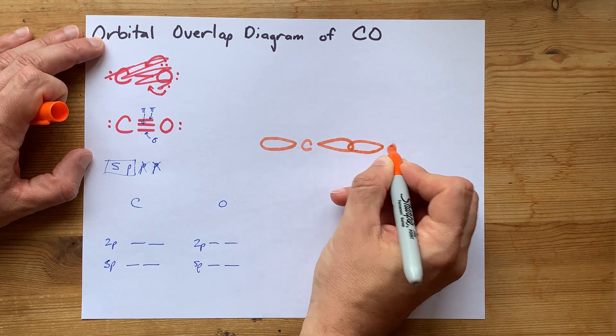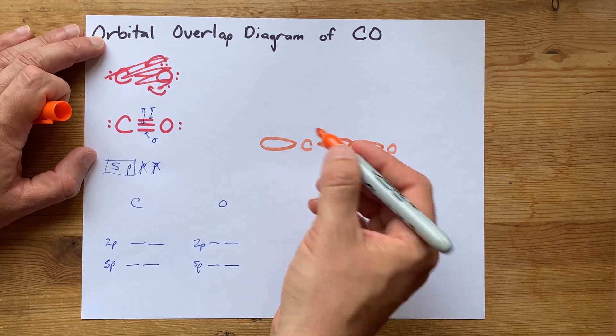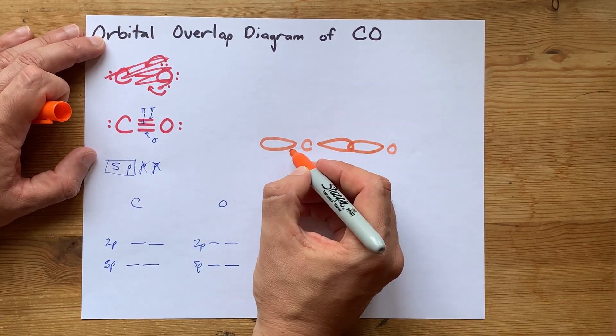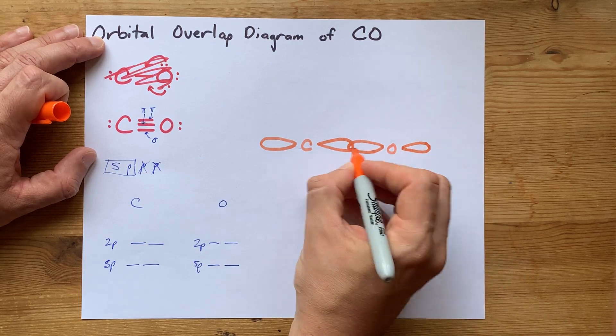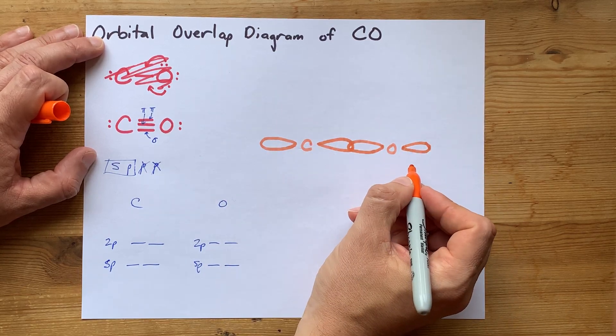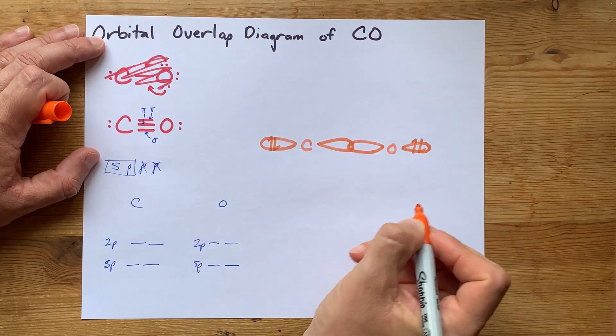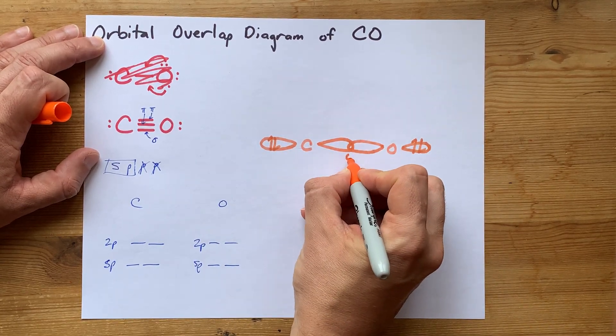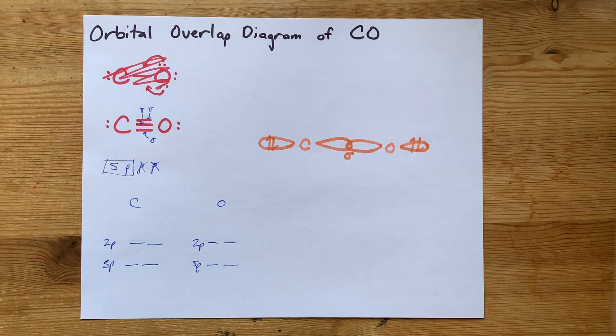You'll just have to memorize those, I think. SP3 is trigonal planar—sorry, SP2 is trigonal planar. And then SP3 is tetrahedral. Here's my SP hybridized orbitals. One of them has a lone pair in it for each of them. And then there's a sigma bond made between them. That's what the hybridized orbitals are for.